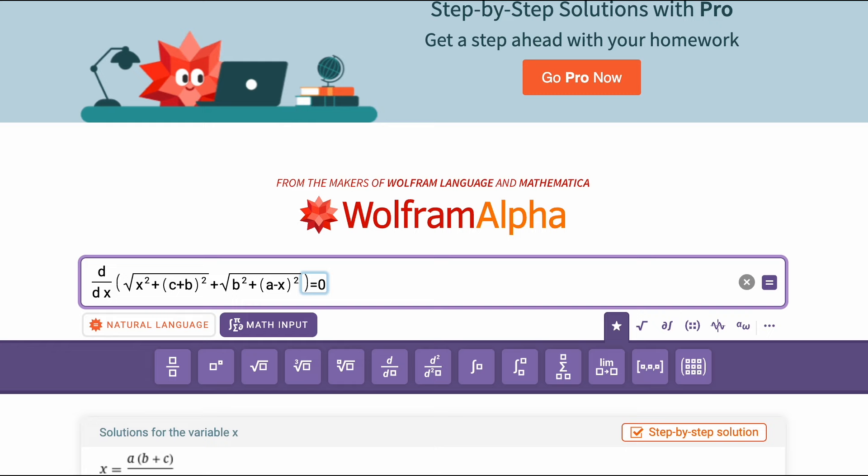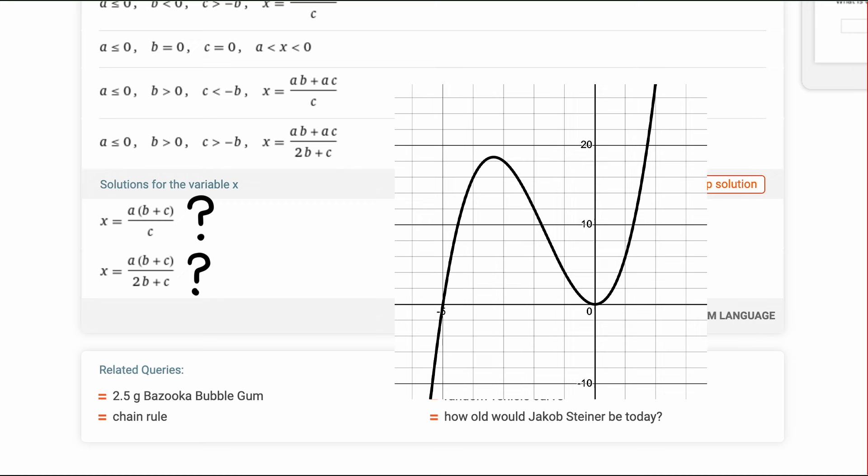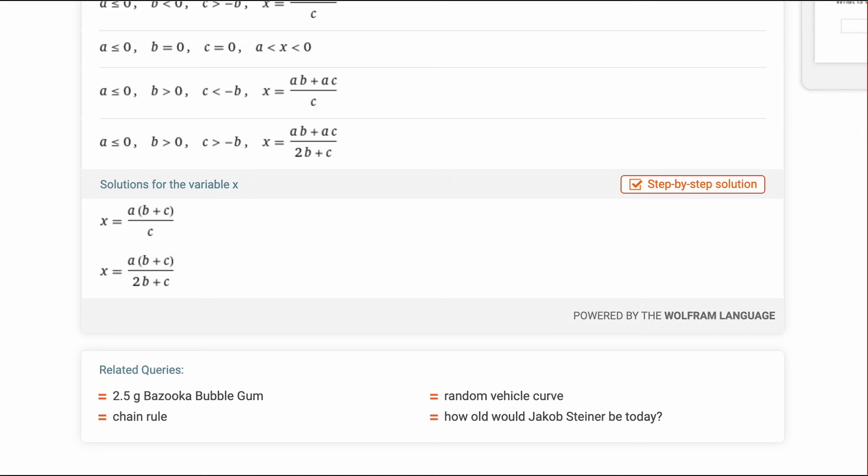We need to check to see which one is actually the minimum. The other could be a maximum or an extraneous solution. To do this, let's check a simple case when c equals zero. That is the rectangular load case. The top one is undefined when c equals zero. The bottom one simplifies to x equals a divided by 2, which is putting the load halfway between the anchors. This tells us that it's the bottom solution that we want. Now how do we use this to check angles?